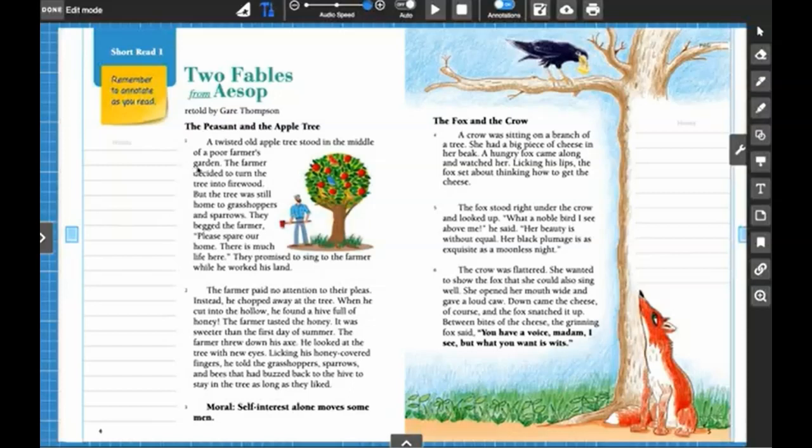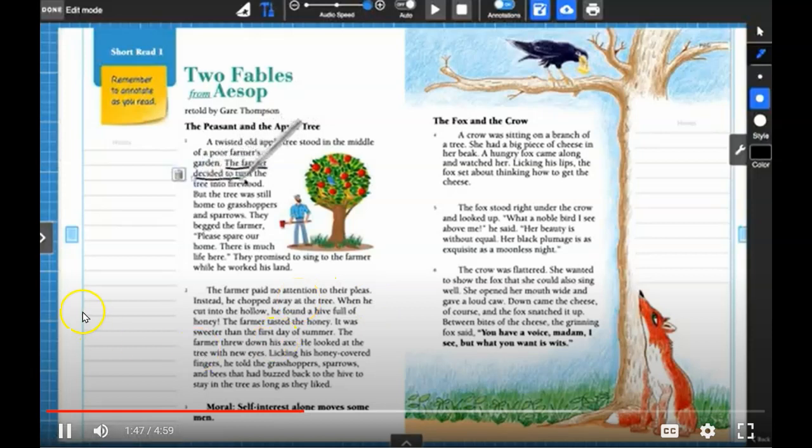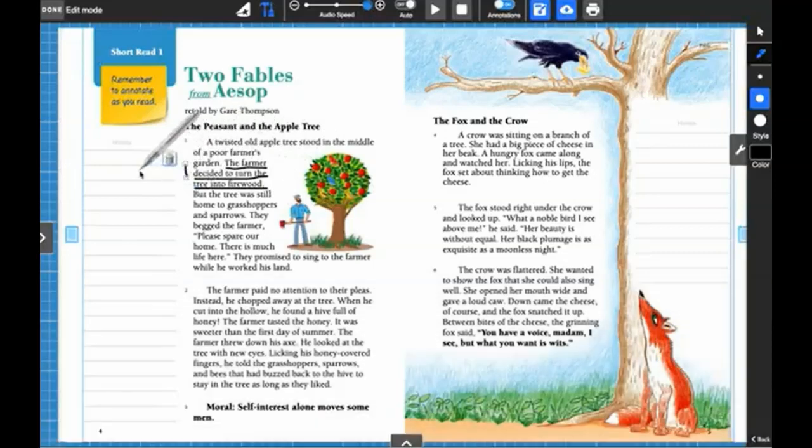An event is something that happens. The next sentence does describe an action in the story: the farmer decided to turn the tree into firewood. This is a key event. I'm going to underline this sentence. The farmer decided to turn the tree into firewood, so make sure that you're underlined, because then you could use this when you're taking your tests. So what does she underline? She underlined, the farmer decided to turn the tree into firewood. That's important. And I'm going to write a one next to it. This is my first event.